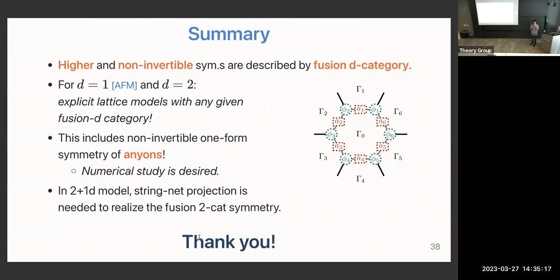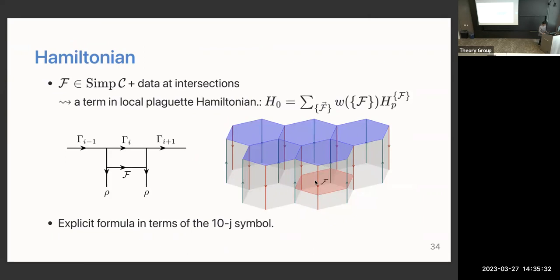This construction gives you a non-commuting model — hopefully close to the chiral case — but you can't ensure that, since it's non-commuting. You really need some numerical study. There are many coupling constants: many possible plaquette Hamiltonians, choices of interfaces, choices of line operators, and for each consistent choice, there are many parameters.